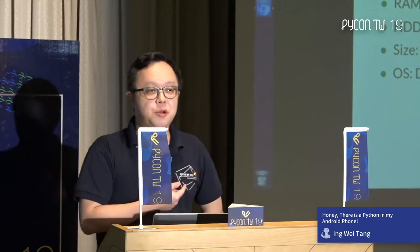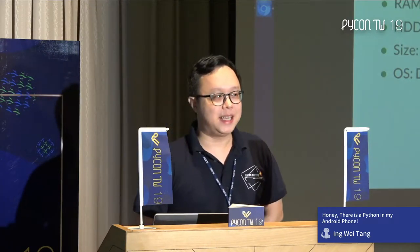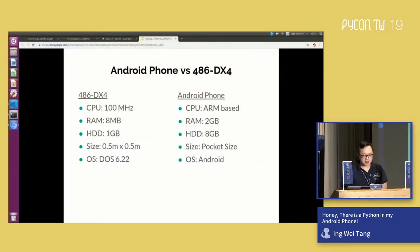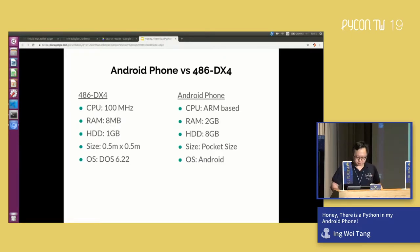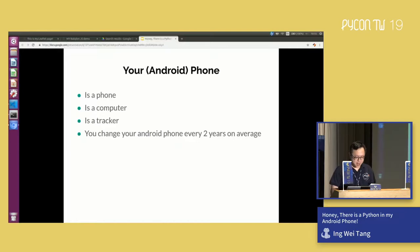One thing that I find fascinating is what we had 20 years ago - that was my first computer - compared to what we have with the Android phone today. If you look at the specs for computers 20 years ago, the 486 DX4: you had one kilobyte of hard disk space, eight megabytes of RAM, and the computer ran at 16MHz. But compared to our Android phone today, you have much more. The Android phone is not just a computer - it's a phone, it's a tracker.